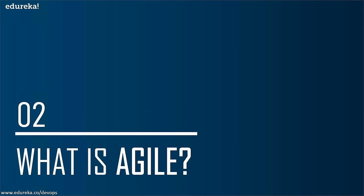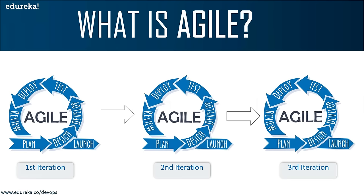Then comes agile to the rescue. Agile is a chain of rapid development and deployment. The first section is always planning, but you break that entire application down into small chunks of code and work on those small services one at a time, following the microservices model, so you don't affect the entire application in general. You plan, design, architect, and develop the application.